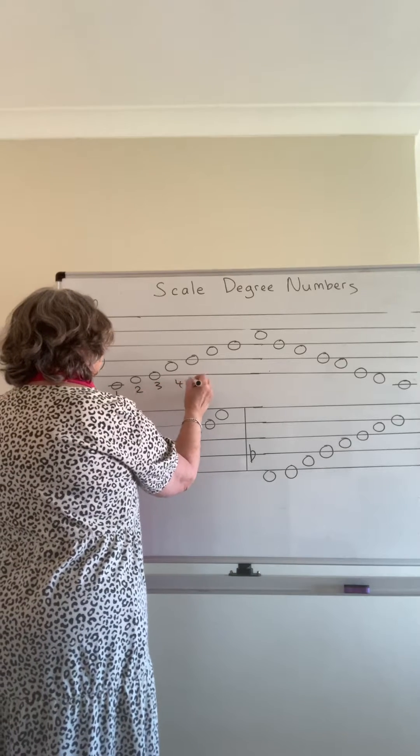So we've got eight, seven, six, five, four, three, two, one. The notes within that scale are always going to be the same number. So D will always be two, and B will always be seven.